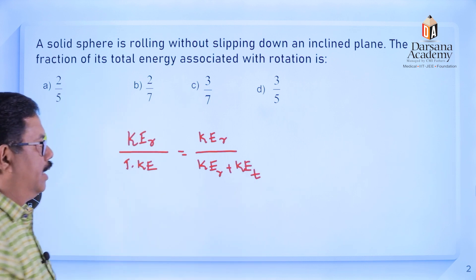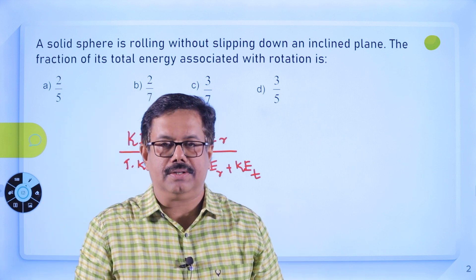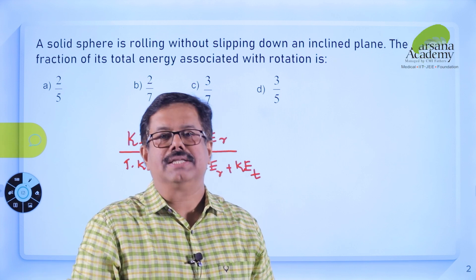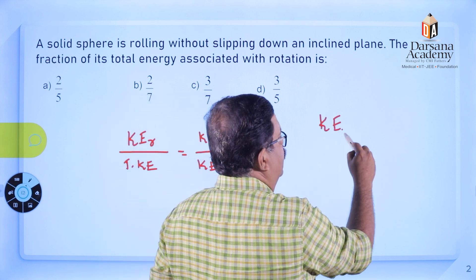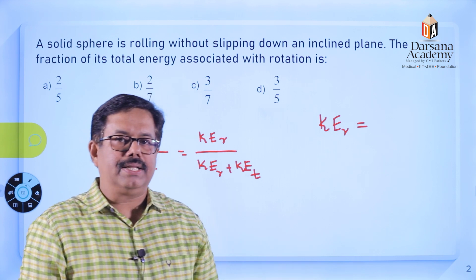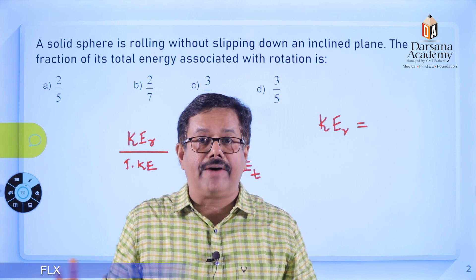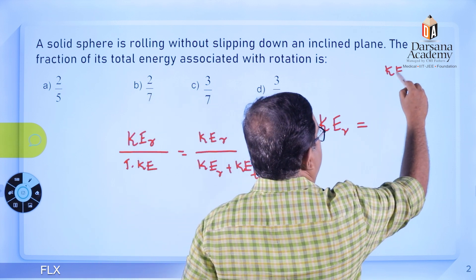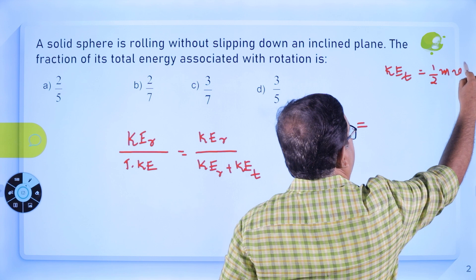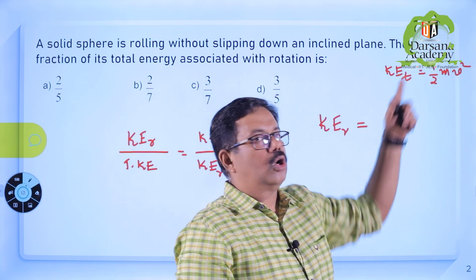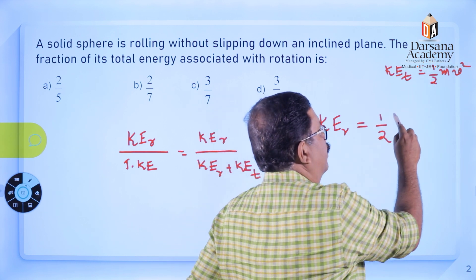This is the formula from our textbook. Different rolling bodies have different moments of inertia and different formulas. I will now present a shortcut method. The rotational kinetic energy formula is: KER = ½ I ω². The translational kinetic energy from 9th standard onwards is KET = ½ mv².